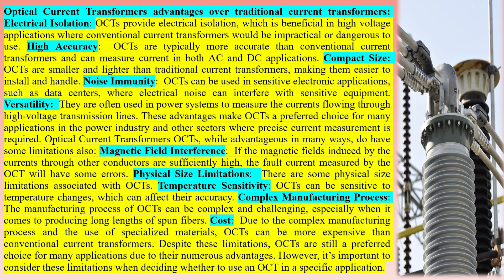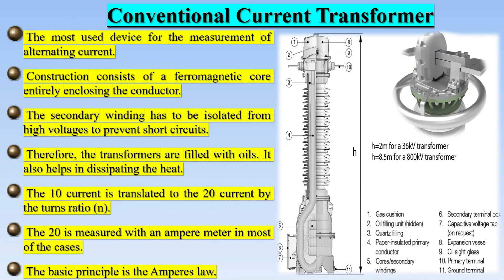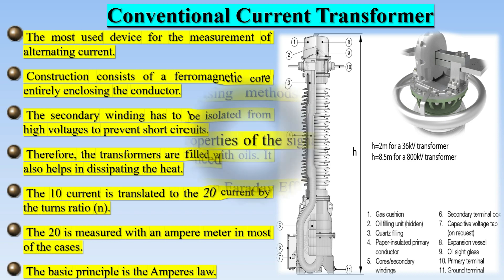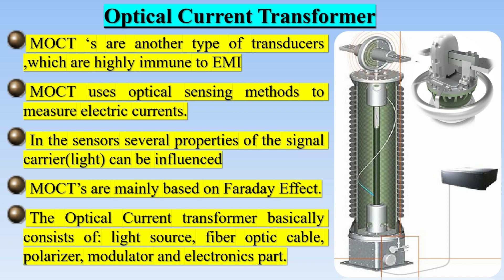Optical current transformers have several advantages over traditional current transformers. Electrical Isolation: OCTs provide electrical isolation, beneficial in high-voltage applications where conventional transformers would be impractical or dangerous. High Accuracy: OCTs are typically more accurate and can measure current in both AC and DC applications. Compact Size: OCTs are smaller and lighter, making them easier to install and handle. Noise Immunity: OCTs can be used in sensitive electronic applications such as data centers. Versatility: They are often used in power systems to measure currents through high-voltage transmission lines. These advantages make OCTs a preferred choice for many applications in the power industry where precise current measurement is required.